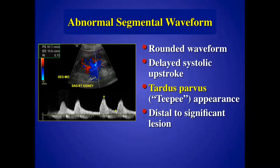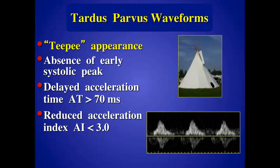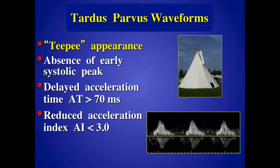We also mentioned tardus-parvus waveforms — that slow rise to systole that we see in the post-stenotic area, typically a little further down from that post-stenotic signal. If you go further downstream, the red blood cells start to reform that flow pattern but with that slow rise to systole. You can calculate acceleration time or acceleration index, but I have my sonographers and my docs look at the waveforms — look for that TP shape. When they see that, they know it's a tardus-parvus waveform. I don't find that calculating it is necessarily reproducible; I want to train their eyes.